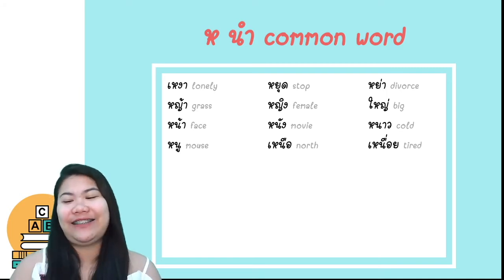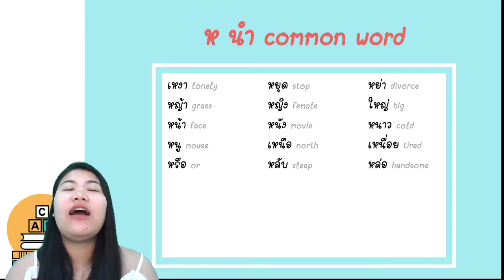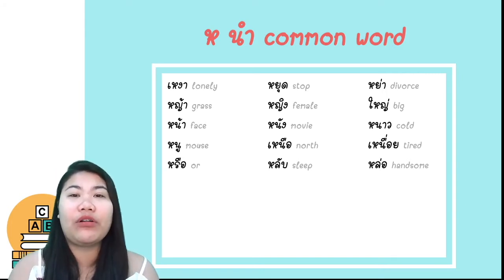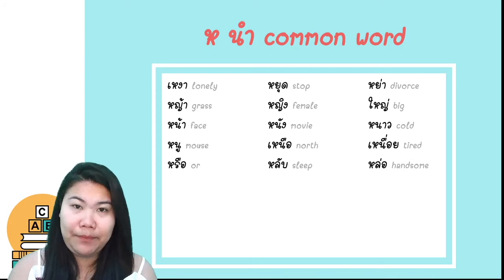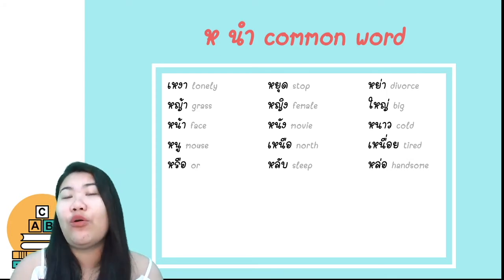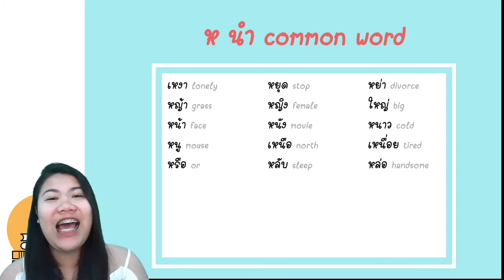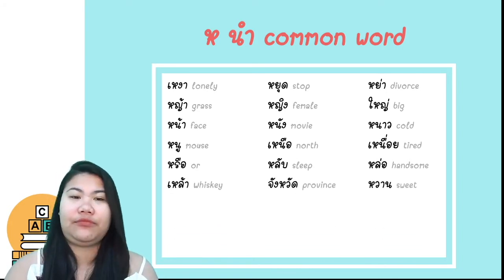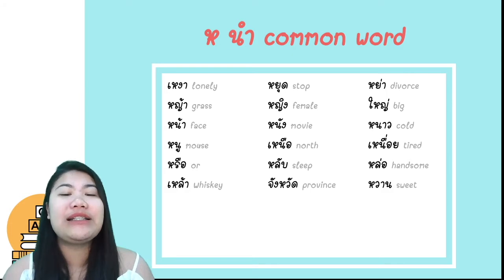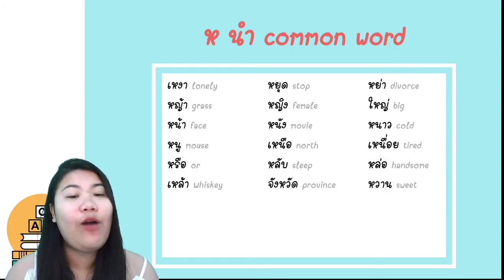เหนื่อย, which means tired. คุณเหนื่อยไหม — Are you tired? The word หรือ, which means or. And the word for sleep: หลับ — make it low tone. And the word handsome in Thai: หล่อ.